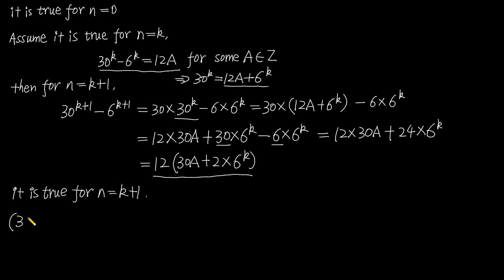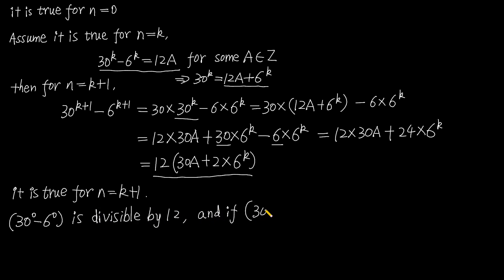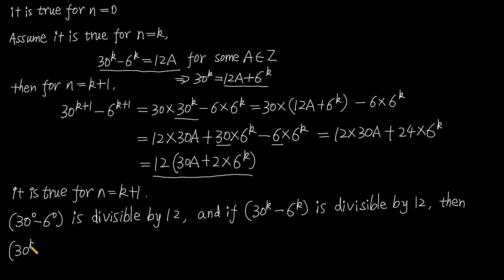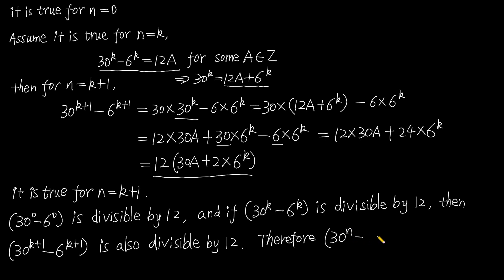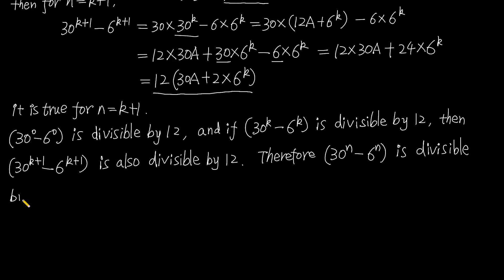Conclusion: 30 to the power of 0 minus 6 to the power of 0 is divisible by 12. And if 30 to the power of k minus 6 to the power of k is divisible by 12, then 30 to the power of k plus 1 minus 6 to the power of k plus 1 is also divisible by 12. Therefore, 30 to the power of n minus 6 to the power of n is divisible by 12 for all integers n greater than or equal to 0.